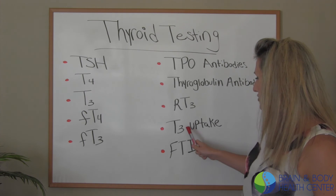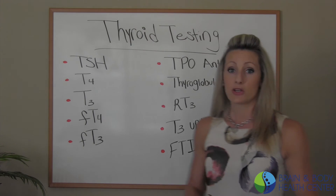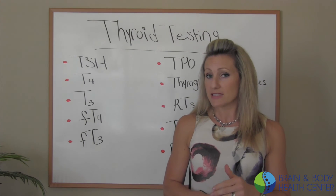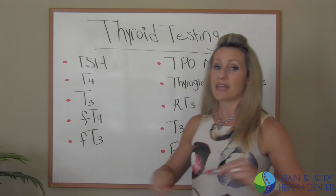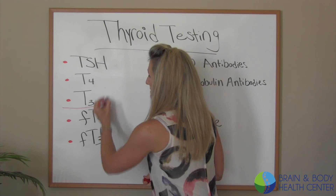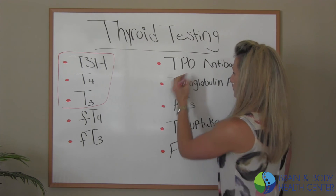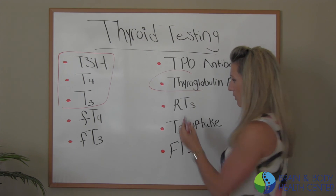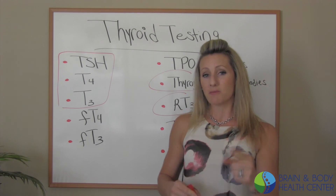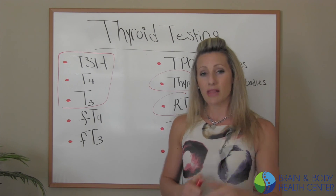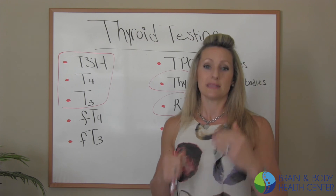We also want to be looking at T3 uptake and free thyroxine index — those are big things we want to see on lab work. The problem with standard medicine is that usually only TSH and T4 are being tested. So if you're having issues elsewhere, that's going to be missed on your lab work, and that could be the main reason why your labs come back normal but you still feel terrible.